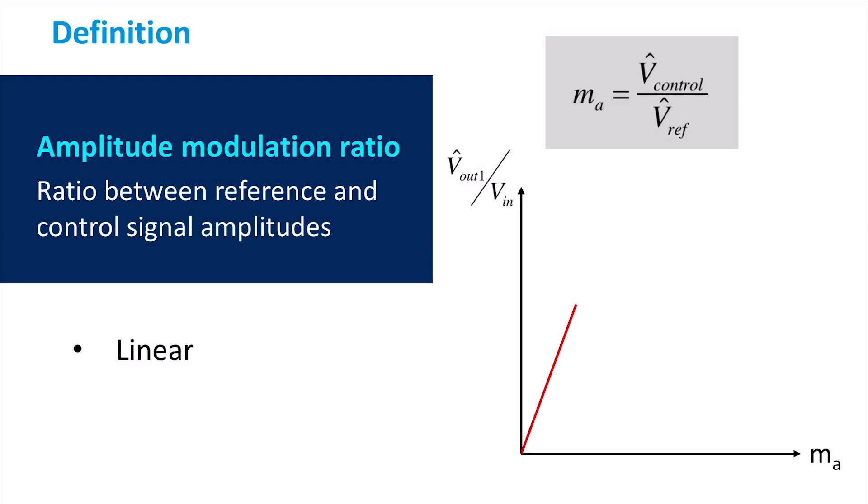The first mode is called linear. Here the output voltage amplitude can be modified linearly by controlling the sinusoidal input signal. Since the output voltage in its fundamental harmonic will be exactly like the input signal, in this mode the operation full control is allowed.